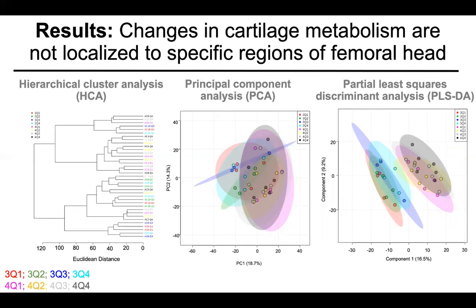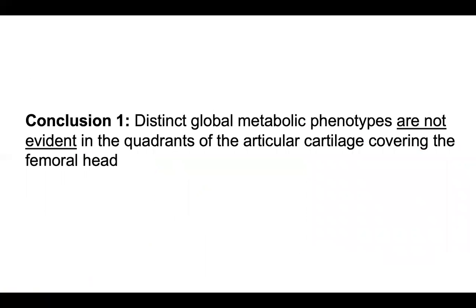First, we wanted to assess overall differences in global metabolomic profiles of our eight experimental groups — grades 3 and 4, each across quadrants one through four. Using unsupervised statistical analyses — hierarchical cluster analysis and principal component analysis — we did not see clear separation between quadrants or grade of OA. We then used a supervised analysis, partial least squares discriminant analysis, and also did not observe separation between quadrants, but we did see two clusters of samples corresponding to the grades of OA. This led to our first conclusion: distinct metabolic phenotypes do not exist in the quadrants of the articular cartilage covering the femoral head, indicating that global shifts in cartilage metabolism occur across the entire diseased joint, not just specific regions.